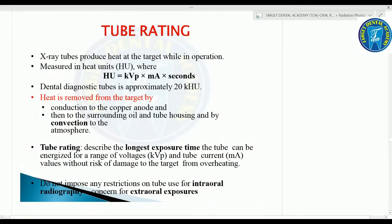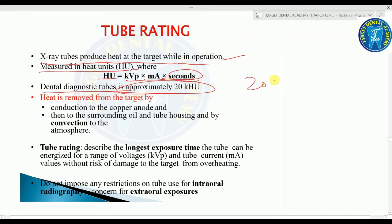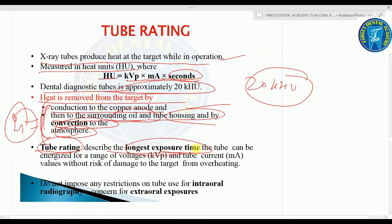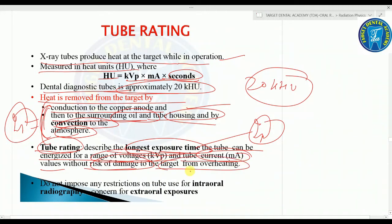Tube rating: X-ray tubes produce heat at the target during operation. Heat is measured in heat units (HU) = kVp × mA × seconds. The dental diagnostic tube is approximately 20 kHU. Heat is removed from the target by conduction through the copper anode, then to surrounding oil and tube housing by convection to the atmosphere. Tube rating describes the longest exposure time the tube can be energized for a range of voltages and mA values without risk of damage to the target from overheating.